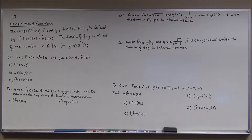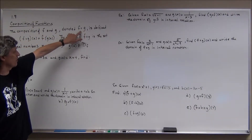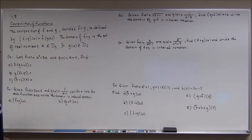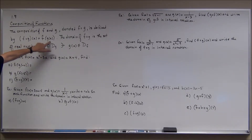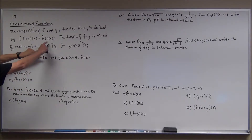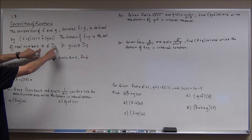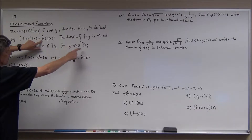We have its own notation here. Composition of functions f and g, denoted as f circle g — sometimes they say f composite g, but most of the time it's f circle g. It looks like 'fog', but it's f of g of x, where you're taking the function closest to x as the inside function, and then taking the outer function of that. The domain of f circle g is the set of all real numbers such that x is in the domain of g — that's the inside function — and then whatever y values you get out of this have to be in the domain of the outside function.